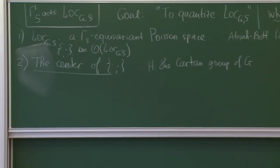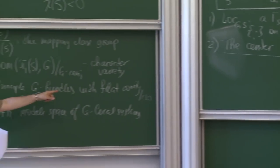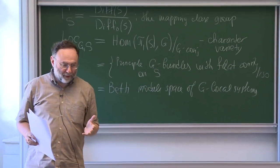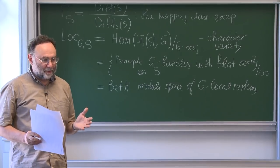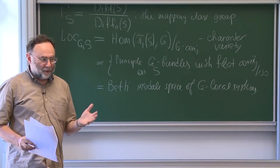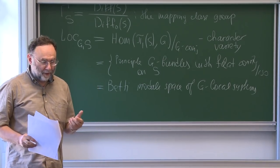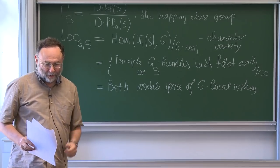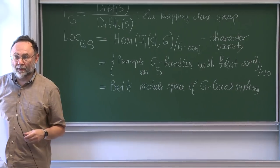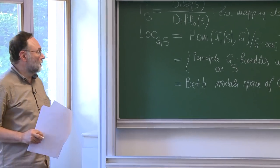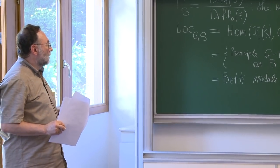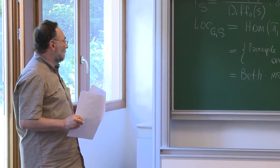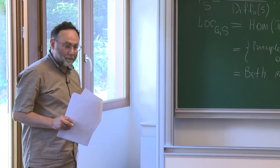Assuming we have a non-zero number of punctures, the fundamental group is a free group. Because it's a free group, you just have to give the image of the generators, which is just some matrices if you're in PGL(n). So you have just an unrestricted collection of matrices modulo conjugation. As for the flat connection on the punctures — no condition. It's topological data. I emphasize this is a topological surface with no complex structure whatsoever mentioned.